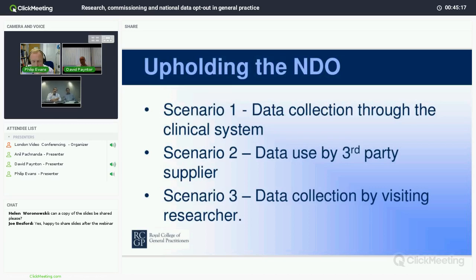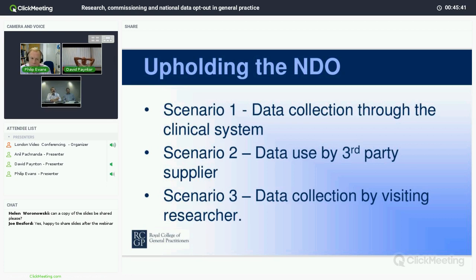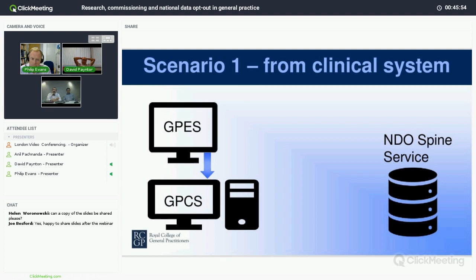Section 254 of the Health and Social Care Act is the section under which Public Health England or the Secretary of State can require NHS Digital to gather the data. The thing to remember about the national data opt-out is that your duty of transparency under GDPR is still there. Part of that means your privacy notices must inform people about the national data opt-out and when it doesn't apply. I'm going to use that to run through three scenarios where a practice is providing data for research and planning purposes.